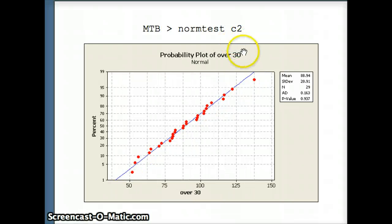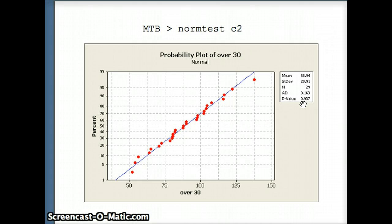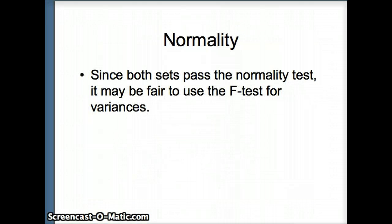Looking at the adults, I feel much better about the adult data set. That gives me a p-value of 0.937, very high p-value. I'm not going to reject normality. Again, it seems reasonable for us to assume that the adults come from a normally distributed population. Of course, we cannot be sure for certain because, again, our sample size is fairly small. So we're going to say, since both sets pass the normality test, it may be fair for us to use the f-test for variances.